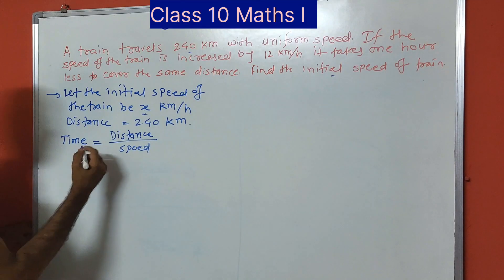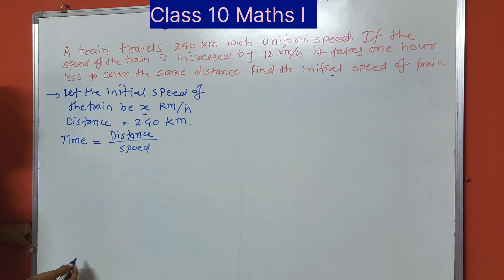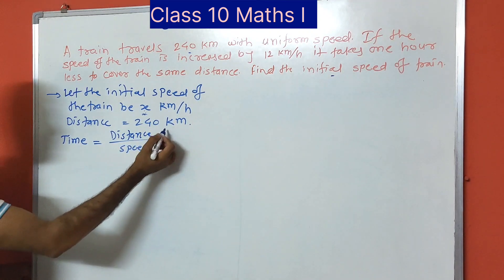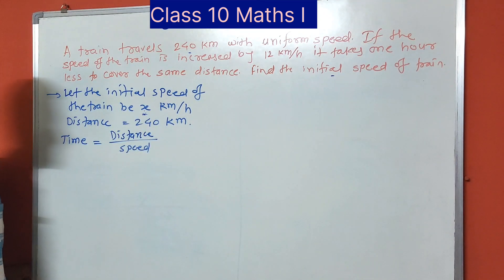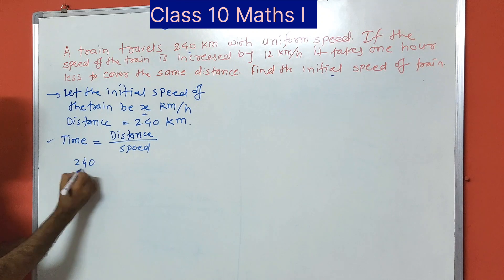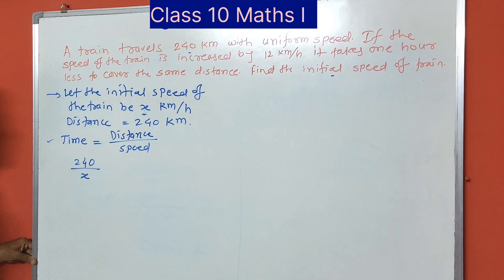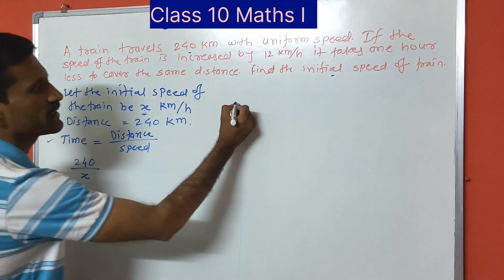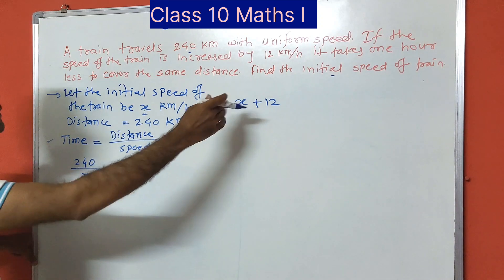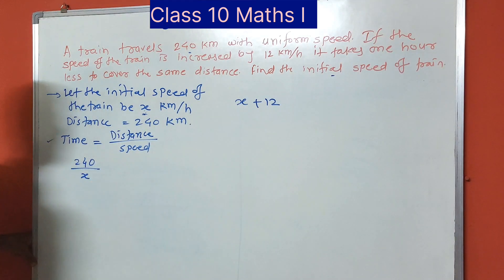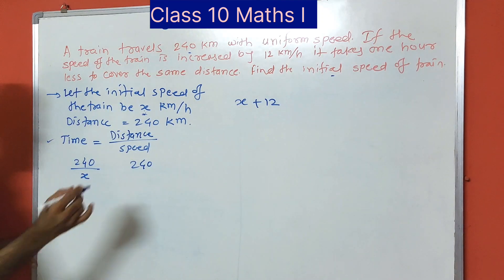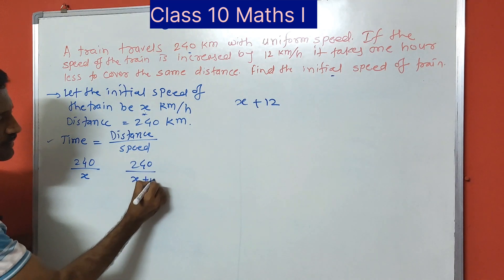We will express the time in the form of distance divided by speed. The initial time is 240 divided by x. When the speed is increased to x plus 12 km per hour, the distance is still the same, 240 km. So the new time is 240 divided by x plus 12.